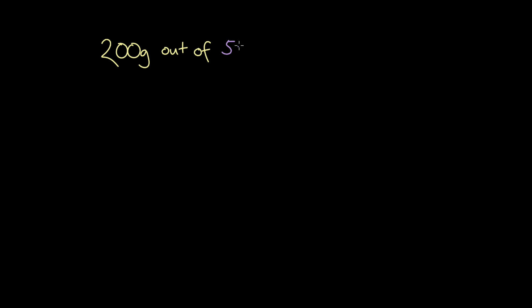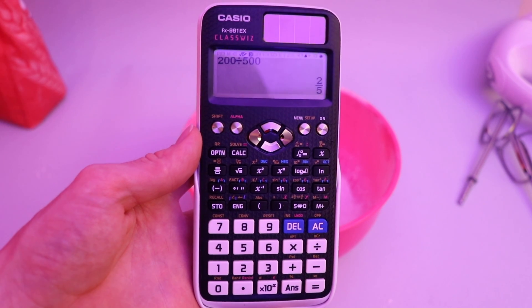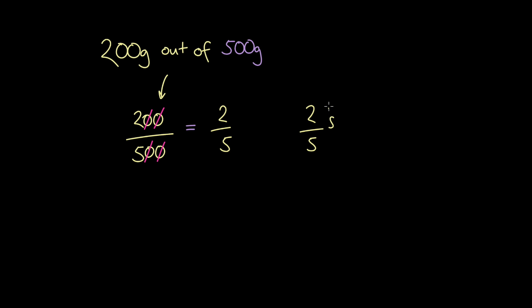If I only have 200 grams, I have 200 out of the 500 the recipe says I need. We could write this as 200 grams over 500 grams. Simplifying this expression by dividing both amounts by 100, since both numbers have two zeros at the end, we can see that we have two-fifths of the amount of flour the recipe says we need, or two-fifths of 500 grams.